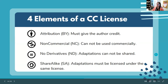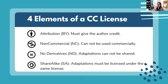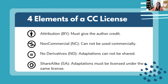The four elements of a CC license: first, Attribution (CC BY) — you must give the author credit; that's the one they all have. Next, NC for Non-Commercial — it cannot be used commercially. Then the equal sign symbol, ND for No Derivatives — any adaptation you make cannot be shared with anyone else. And finally, the little arrow, Share Alike (SA) — if you make an adaptation, it must be shared under the same license. Different combinations of these four make up all the different licenses.